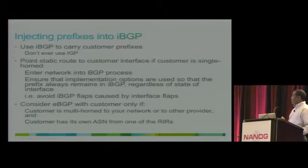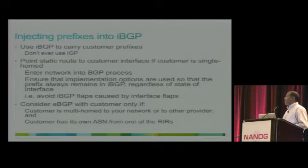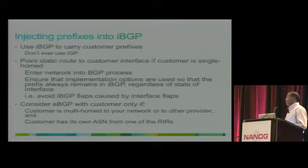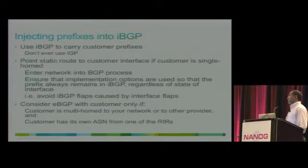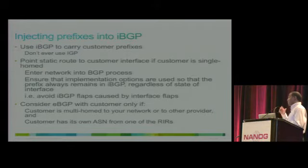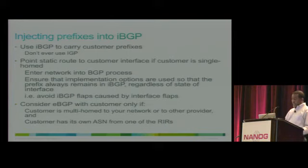You can point the static route to the customer interface, or depending on the scenario, create a floating static route that will not go away even if the customer interface goes down — so that doesn't propagate to the rest of the network. Obviously, you don't redistribute customer prefixes directly to your IBGP peers; you only use this for internal routing and your internal table.